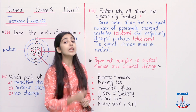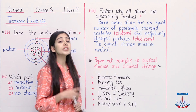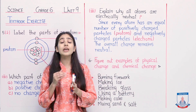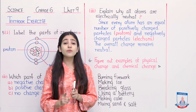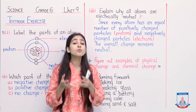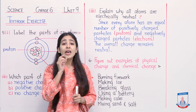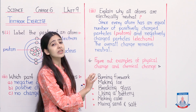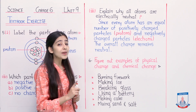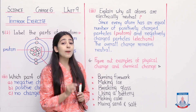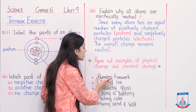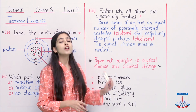Moving to the first example - burning a firework. Whenever anything burns, whenever we light a fire anywhere, it necessarily happens in the presence of oxygen, because oxygen continues the combustion process. Without oxygen, we cannot light a fire. This means if you are burning something and lighting a fire, a chemical reaction takes place with oxygen. The chemicals present in fireworks will react with oxygen and bring about a chemical change. So the first example, burning a firework, is actually a chemical change. You will write: chemical.